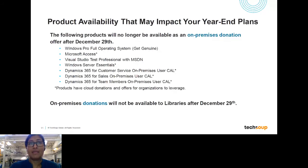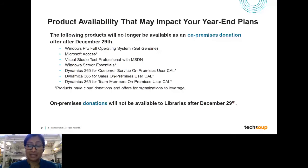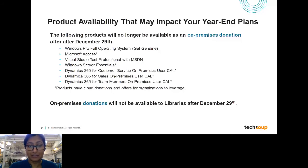I want to point out that though these products might not be available as on-premises donations, everything with an asterisk next to it is going to be available through cloud offers — and many through cloud donations. Microsoft Access is available in the Microsoft 365 donation offer. Windows Server Essential is similarly available. Dynamics licenses are already included in the cloud versions of Dynamics products. And if you need on-premises versions, we'll still be able to offer those at a discount starting in January with Software Assurance.